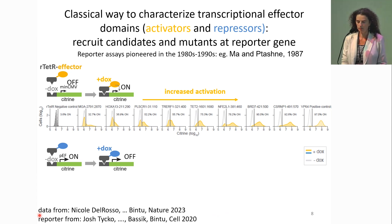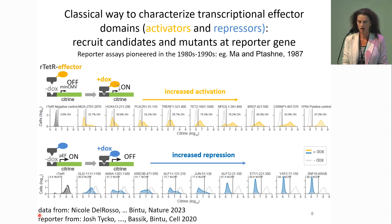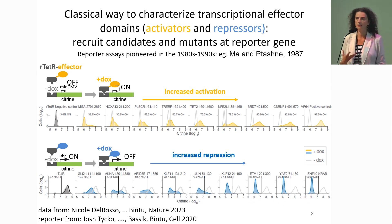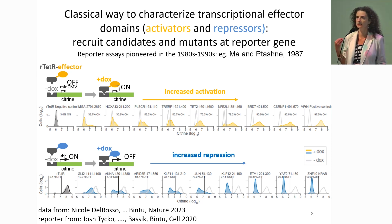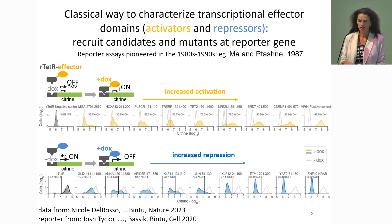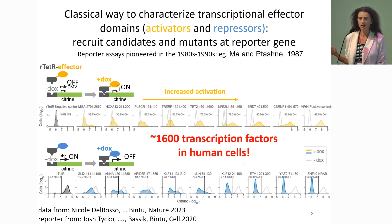Conversely, you can test repressors by recruiting them at a promoter that starts on, and as you recruit stronger and stronger repressors, more and more cells turn off until all cells are completely off. For each of these distributions, we had to spend weeks — sometimes months — making a single cell line that stably has the reporter integrated and has each synthetic transcription factor fusion delivered by lentivirus. With 1,600 transcription factors and many pieces and mutants to test, we can't do this one at a time.